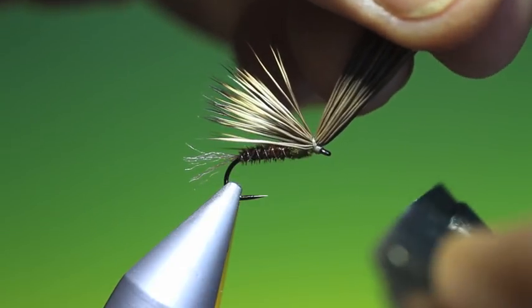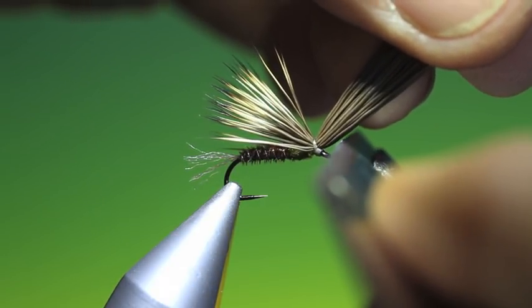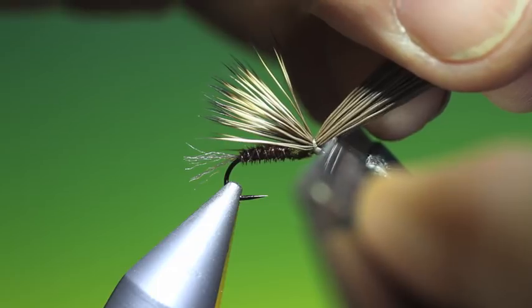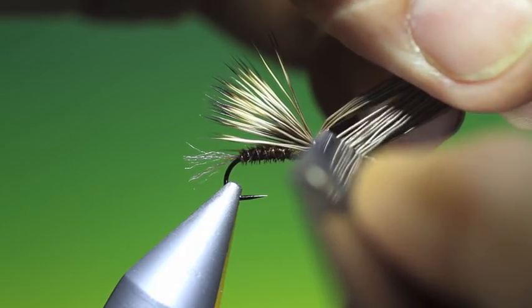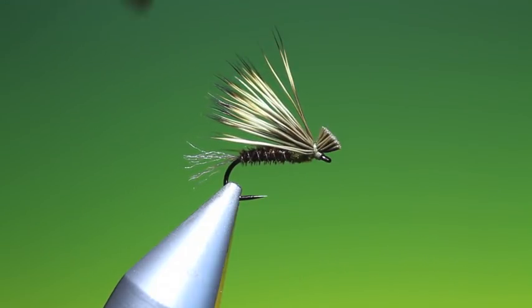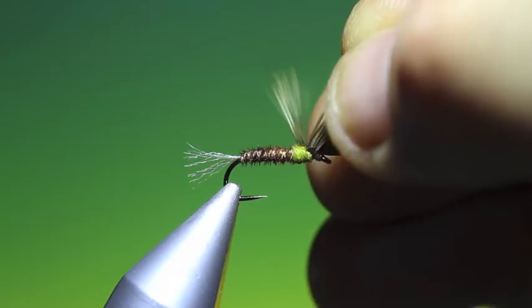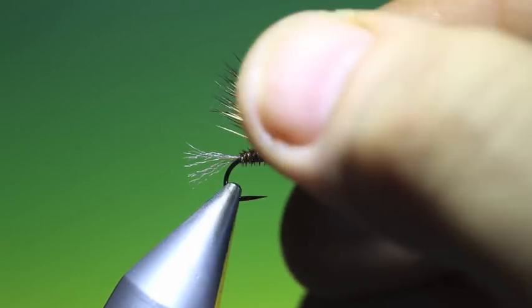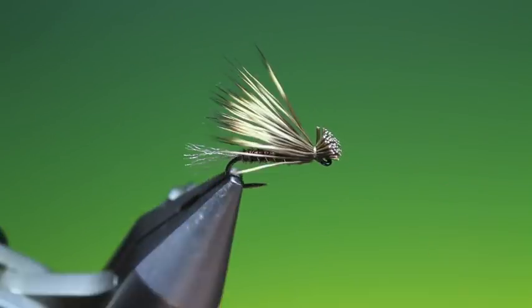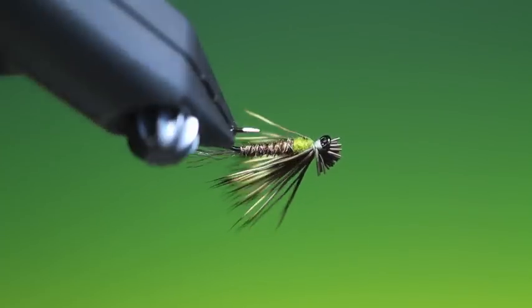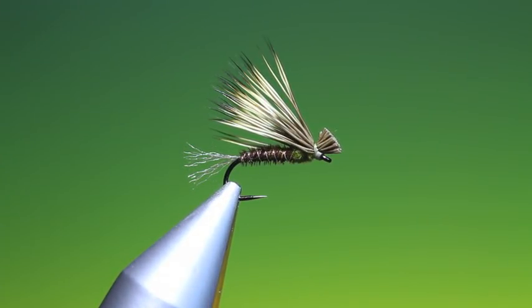Because I like it to push a bit of water if it's retrieved. I can lift our wing to position it. That's it. Pheasant tail X caddis. Great little fly. Thanks for watching.